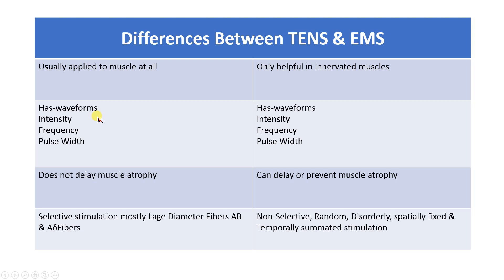TENS has parameters including waveform, intensity, frequency, and pulse width, which can be adjusted according to the patient's condition. EMS has the same parameters, also adjustable based on the patient's condition or the desired effect. Notably, TENS does not delay muscle atrophy, while EMS can delay or prevent muscle atrophy.